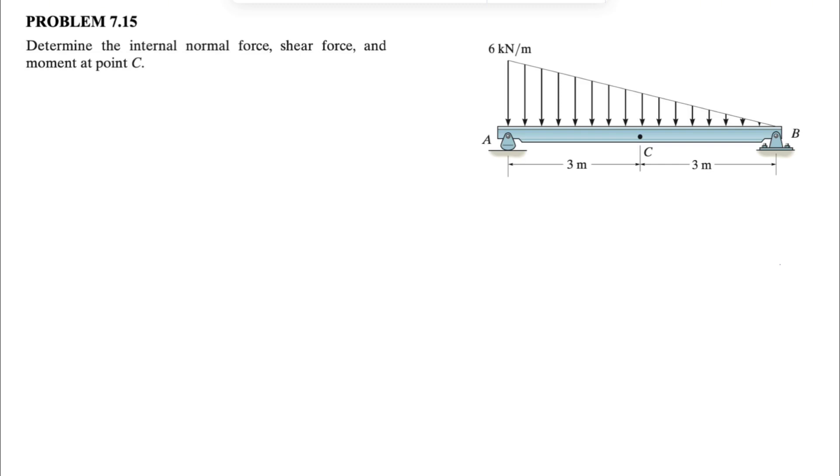So as always, we're going to start with the free body diagram of the whole system. We have this beam that has a distributed load, and we have a beam at point B, which means we have both X and Y components, call this Bx and By. We have a rocker at point A, which means we only have Y component, and we have this distributed force, which is a right triangle.